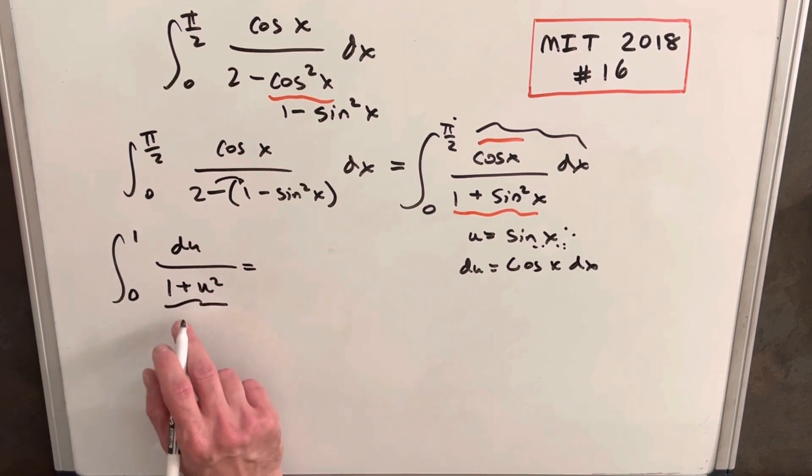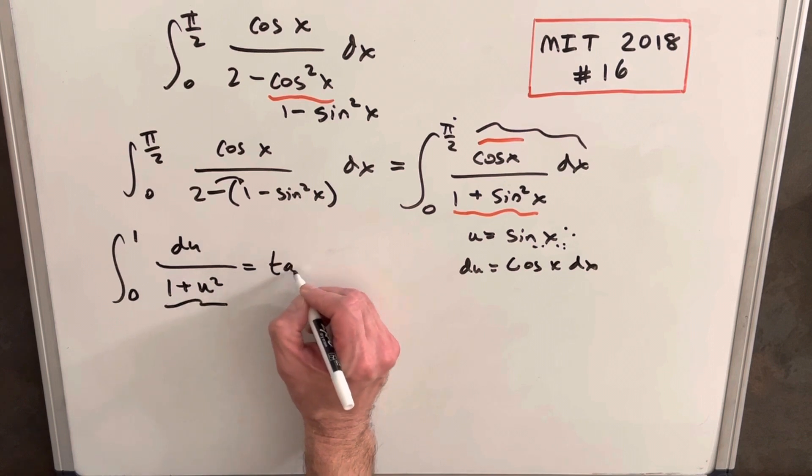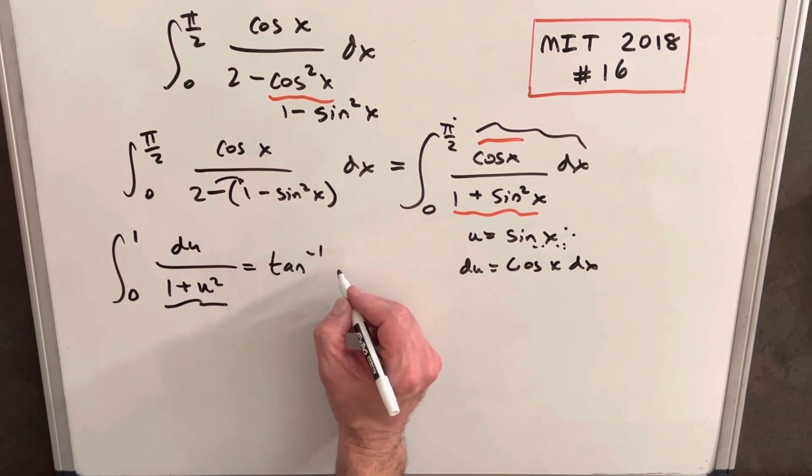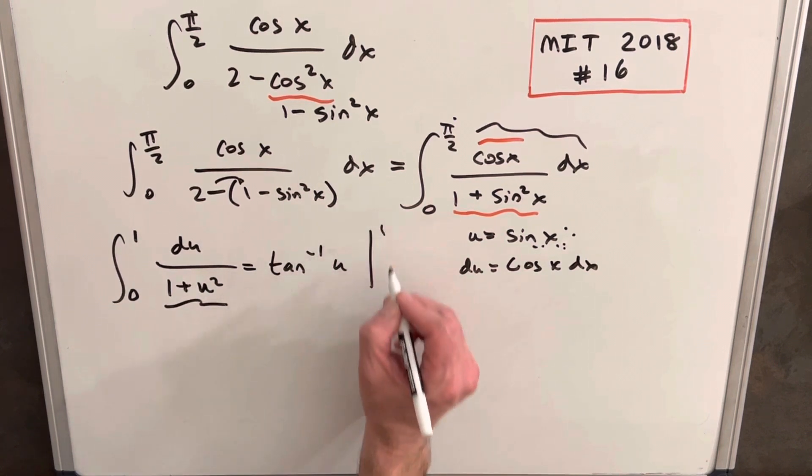This integral is arctan. So we'll have inverse tan of u evaluated from 1 to 0.